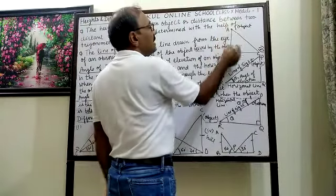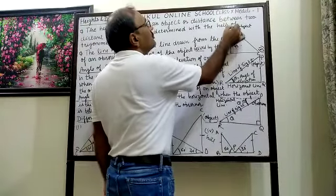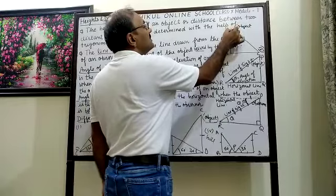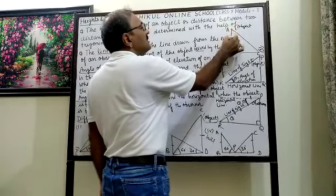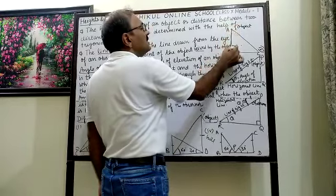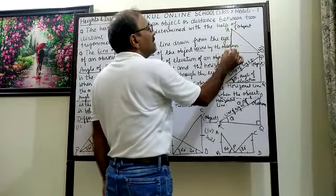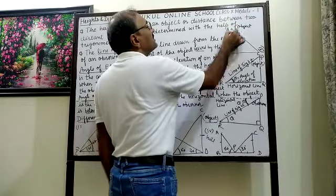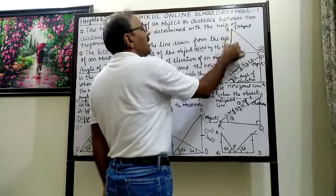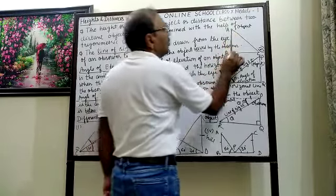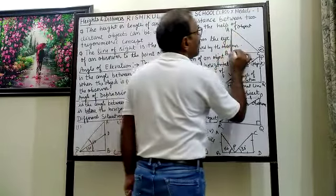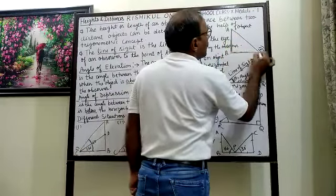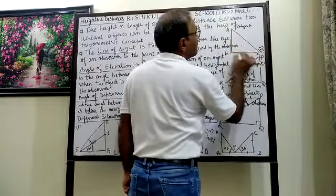There are two objects, A and B. Generally, the vertical distance is called height, and the horizontal distance is called distance.